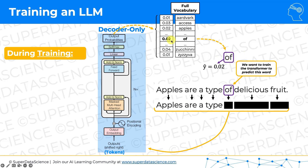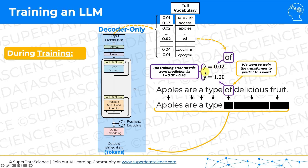The probability that we got is 0.02 or 2%. We want that probability to be 100% because in this particular sentence, that is the truth — that's the next word. We don't look at the probabilities of all the other words. So we're going to calculate the training error, and in this word prediction the training error is 0.98. We want it to be 1, it's 0.02, so the difference is 0.98. That's the value that gets backpropagated through the network — that's the error for this particular prediction.